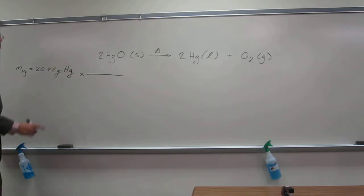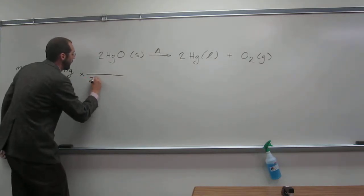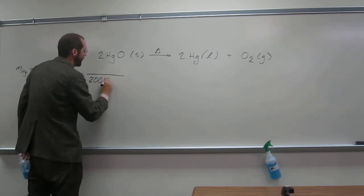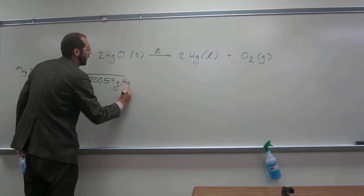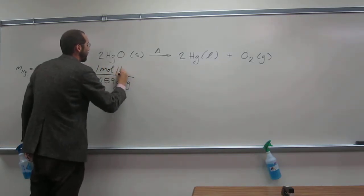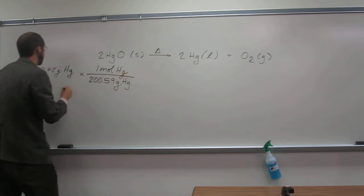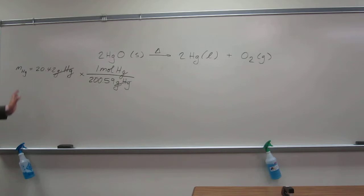If I look up at the periodic table, I can get that number: 200.59 grams of mercury per one mole of mercury. So that cancels there. Is everybody okay with that? So now we're at moles of mercury. Everybody cool with that?